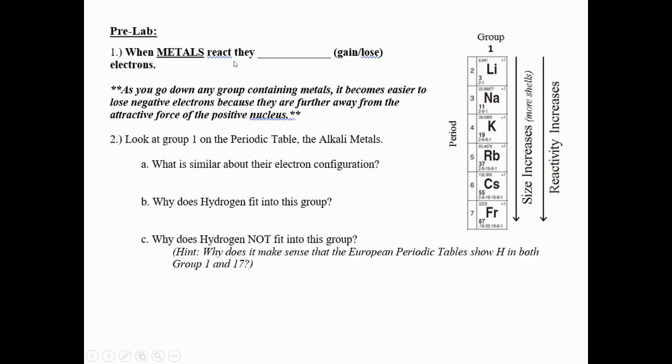Okay, so going through this quickly, when metals react, they tend to lose electrons because metals generally have one, two, or three valence electrons. The easiest thing for them to do is lose electrons to become more stable and get that octet feeling.